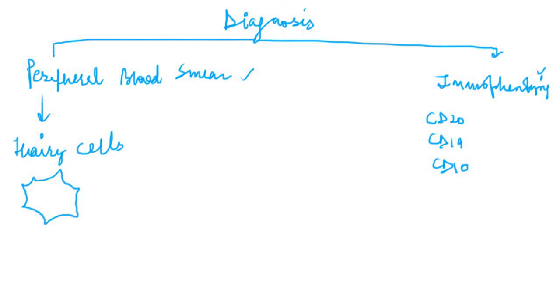Now apart from peripheral blood smear and immunophenotyping, there is another diagnostic criteria and it is basically the detection of an enzyme which is called as tartrate resistant acid phosphatase. So if this enzyme is stainable or this enzyme is detectable, then we can be sure that it is a case of hairy cell leukemia. So this is the short video on hairy cell leukemia, its clinical features, pathophysiology, and the diagnosis.